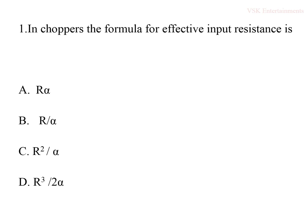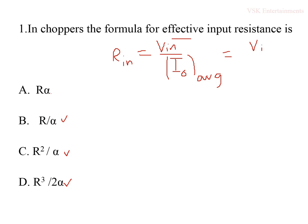The first question: in choppers, the formula for effective input resistance is — options are R×α, R/α, R²/α, and R³/2α. Effective input resistance is defined as the ratio of input voltage Vin to the average output current, that is Vin divided by I_naught_average. Average output current equals average output voltage divided by resistance.